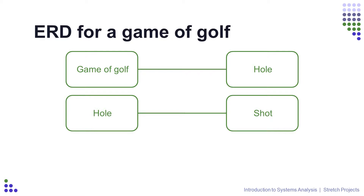Now think about the wording of the sentences: there are many holes in one game of golf, and there are many shots in one hole. We know that there are many of something and one of something else on each occasion. This is the relationship that the two entities have to one another — it's called a one-to-many relationship. We represent this type of relationship on an Entity Relationship Diagram by adding a crow's foot to the line at the end next to the thing that there are many of.